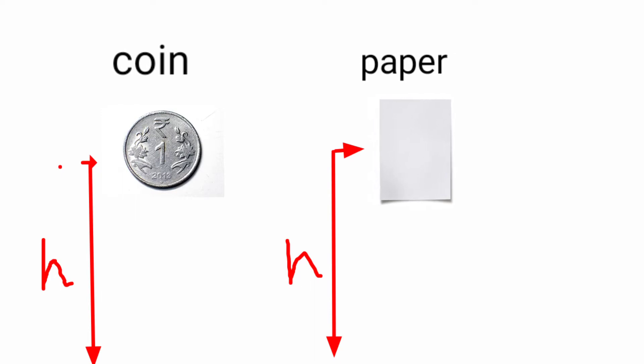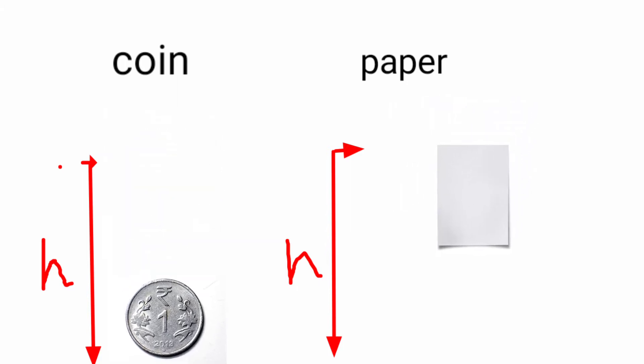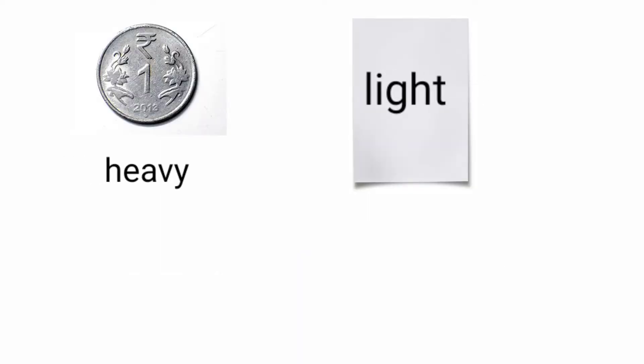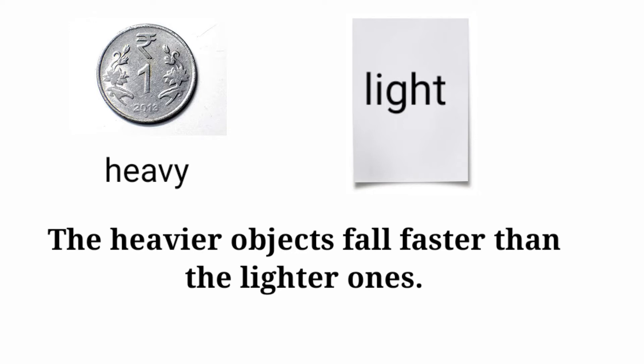Suppose you drop a coin and a piece of paper from the same height. Which of the two will hit the ground first? You will see that the coin reaches the ground earlier than the piece of paper. So we may conclude that the coin is heavier than the piece of paper. It means the heavier objects fall faster than lighter ones.